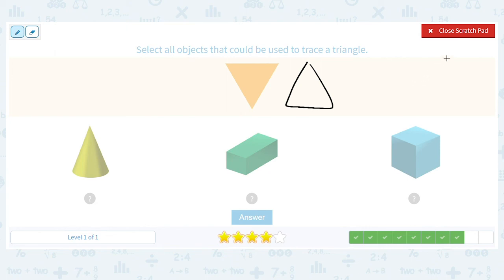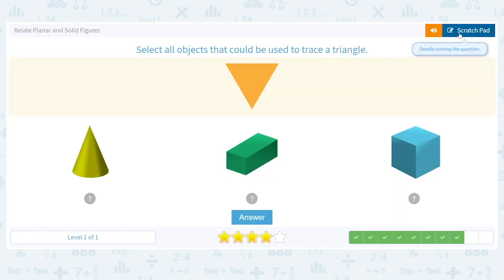Which of these could be used, laying flat, to trace a triangle? Here's a hint. There's only one. And I hope you picked it. It is the cone.